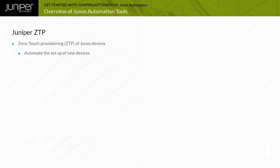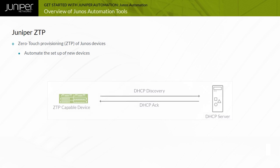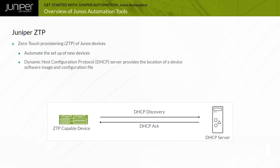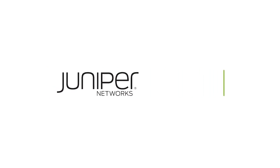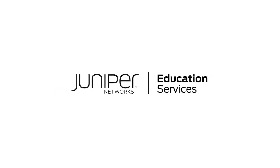Zero-touch provisioning or ZTP enables you to set up new devices in your network without manual intervention. When you connect a device to the network and boot it with a default configuration, it attempts to upgrade the Junos OS software and load a pre-existing configuration file from the network. The device uses information configured on a Dynamic Host Configuration Protocol or DHCP server to determine whether or not to perform these actions and to locate the necessary software image and configuration files. If you do not configure the DHCP server to provide this information, the switch boots with the pre-installed software and default configuration.